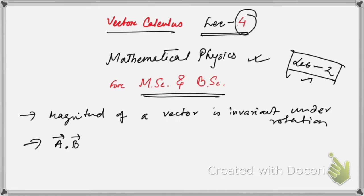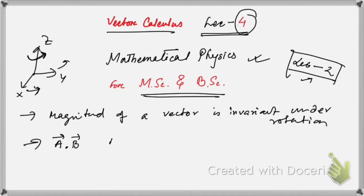These are two vectors and after rotation of the x-axis in a 3D coordinate system — x, y, z — if you rotate the coordinate system about the z-axis, keeping z fixed through a certain angle, then vector a is transformed to a prime and b is transformed to b prime. We need to prove that the dot product of these two vectors equals the dot product of the transformed vectors. That is another property.